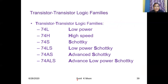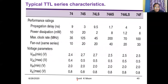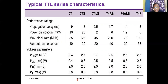Transistor-transistor logic: initially the 7400 series standard TTL had a major limitation — power dissipation is very high. To avoid that power dissipation, new sub-logic families came: 74L (low power), 74H (high speed), 74S (Schottky), 74LS (low power Schottky), 74AS (advanced Schottky), and 74ALS (advanced low power Schottky). These are the sub-logic families of TTL. The typical TTL series characteristics show a comparison of different standard sub-logic families.